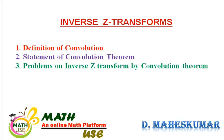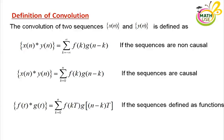The first one is the definition of convolution. The convolution of two sequences x of n and y of n is defined as x of n star y of n, which is equal to summation k equal to minus infinity to plus infinity of f of k times g of n minus k. This is for when the sequences are non-causal.